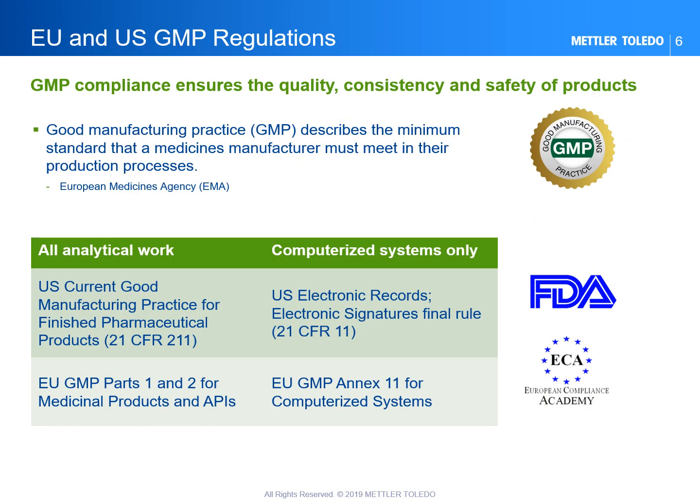Good manufacturing practice, abbreviated to GMP, describes the minimum standard that medicine manufacturers must meet in their production processes. GMP laboratories typically work to one or more of the regulations shown in the table. The two regulations in the left column are applicable to all analytical work, while this video focuses on the two regulations in the right column, as these are applicable to thermal analysis instruments with a computerized system for control, data acquisition, and processing of data.